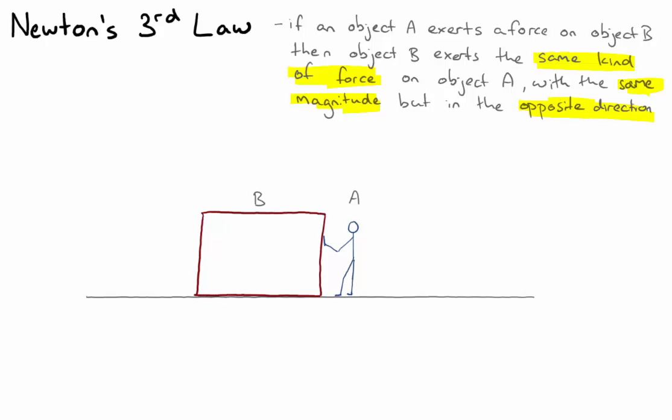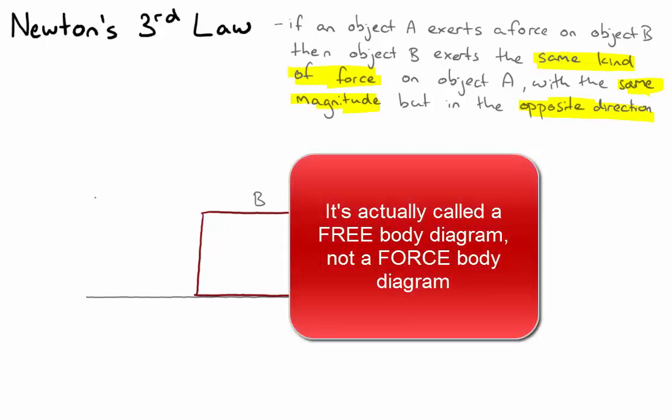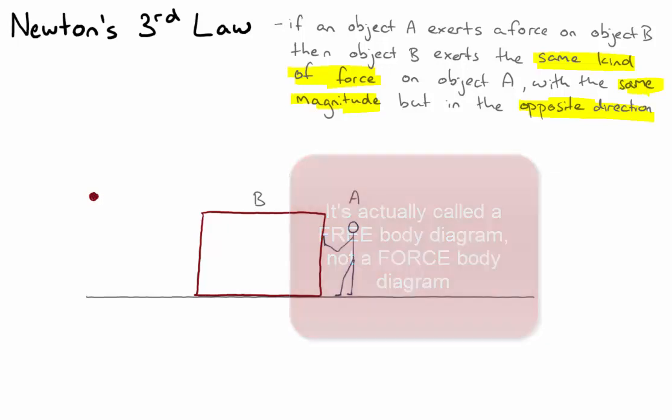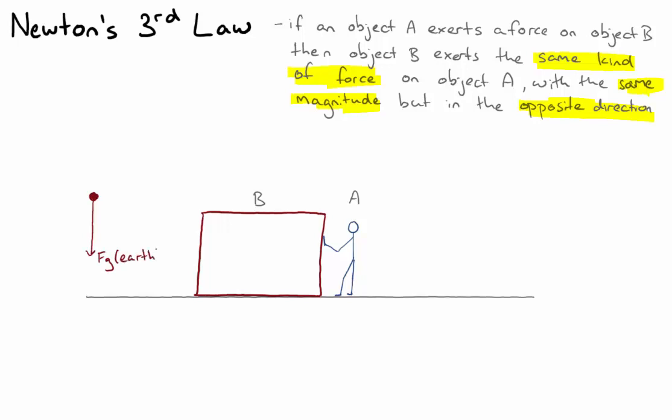So let's start with a force body diagram for object B, the box. Let's model B as a particle, and we'll think about all the forces that are acting on it. Well, first we have a gravitational force, which is applied by the Earth, pulling that box down.